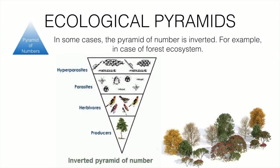The pyramid of numbers can also be inverted. If the producer is just one tree, herbivores like birds feeding on it are more numerous, parasites on those birds are even more numerous, and hyper-parasites are even greater in number. Since the number of organisms increases at each trophic level, the pyramid is inverted — this is called the inverted pyramid of numbers.